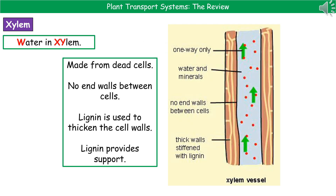A few key features about xylem: firstly, it's made from dead cells. There are no end walls between the cells — as you can see in the diagram on the right, it's just a long tube, kind of like a straw. We've got lignin, which is a chemical used to thicken the cell walls, hence why they're now dead, and that lignin is there to provide support for the cells.